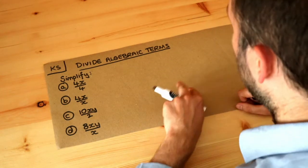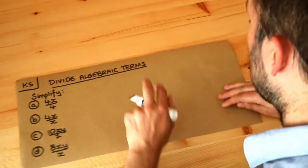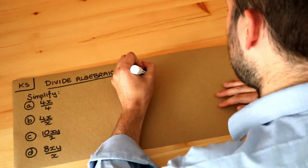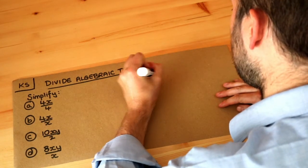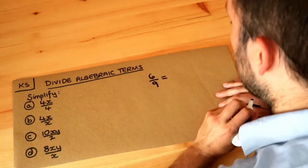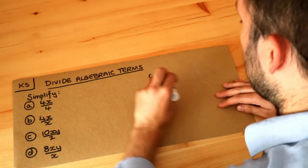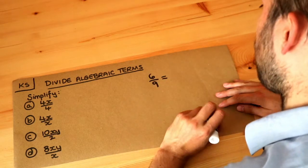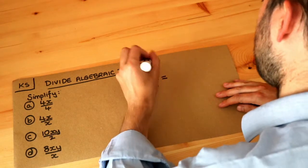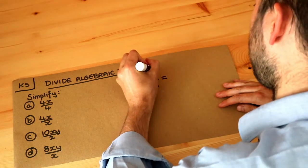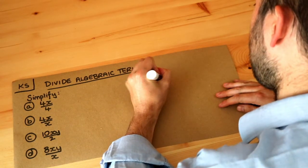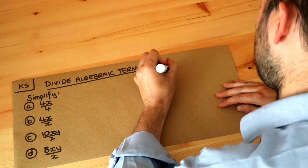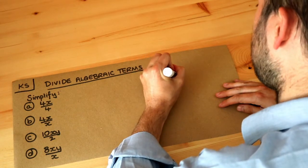Just think about how we simplify fractions. If I had six ninths, we could simplify that by dividing top and bottom by three. So if we divide top and bottom by three, that would give us two thirds.